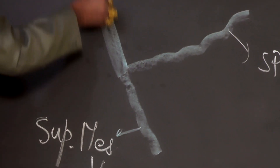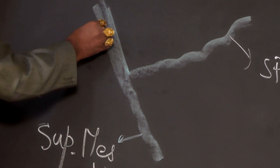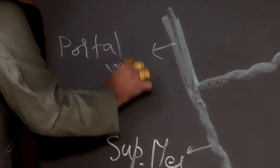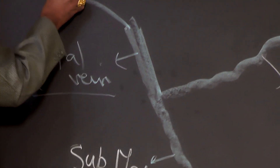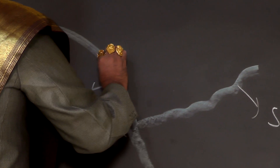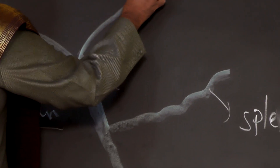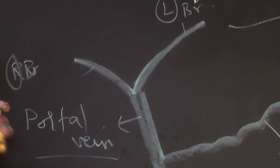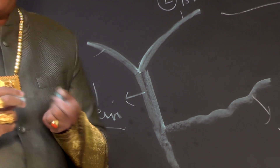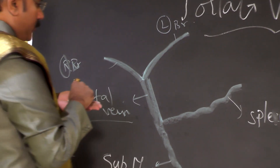The portal vein is about eight centimeters long. It divides at the porta hepatis of the liver into a right branch and a left branch. This is the right branch and this is the left branch of the portal vein, which finally opens up into the sinusoids of the liver.